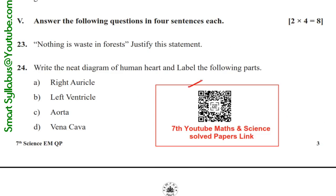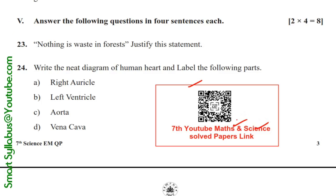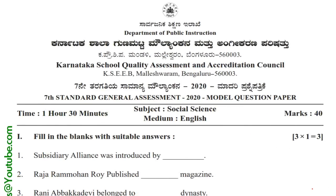This box is related to the QR code — you can scan this QR code with the help of your Android phone and get directly the videos related to the maths and science question paper, which are already solved. At the end, students, we have the Social Science paper, also in English medium, so English medium students can make better use of these question papers.